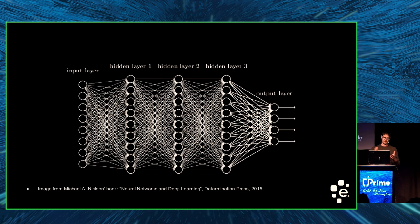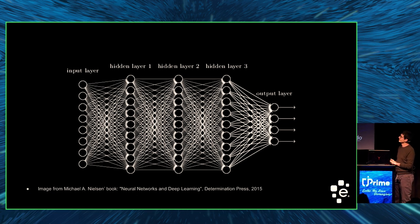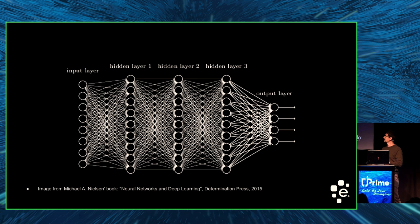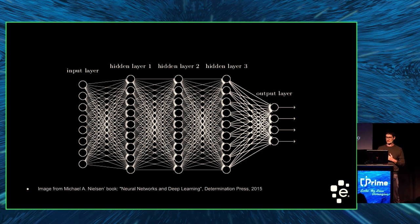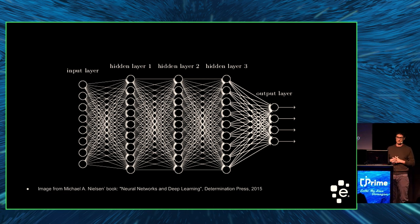When classification starts, these numbers flow through different hidden layers of the neural network. On the output layer, we find all the different classifications we defined, and for each classification we get a number representing how certain the ML model is that this image belongs to that class.